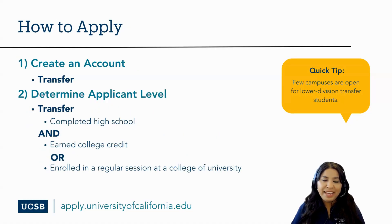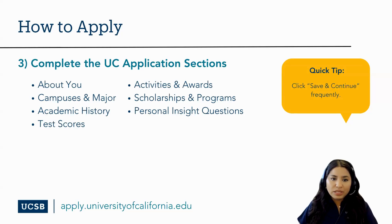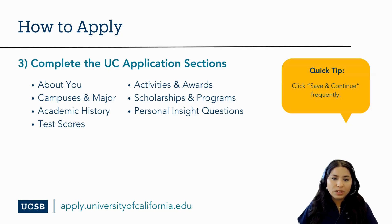When you're ready to apply, you may head to universityofcalifornia.edu/apply to create your UC application account. Then you'll determine your applicant level — transfer applicants are students who have completed high school, earned college credits, and enrolled in a regular session at a college or university for either the fall, winter, or spring term. You'll then complete the UC application sections including: about you, selecting your campuses and major, inputting your academic history. For transfer students, you'll want to add any college coursework from community colleges or other universities, including your test scores, activities and awards, scholarships and programs, and the personal insight questions.